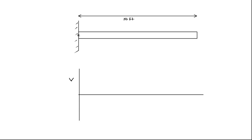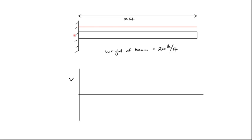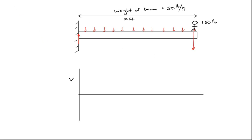Here's an example in which we have a beam that's cantilevered to the wall, or fixed to the wall. In this case the beam has a weight of 20 pounds per foot, so each foot of the beam weighs 20 pounds. There's also a person standing on the very edge of the beam, and that person weighs 150 pounds — we'll treat this as a point loading of 150 pounds at the very end. The support reaction at the wall equals 20 pounds per foot multiplied by 10 feet plus the 150-pound person.